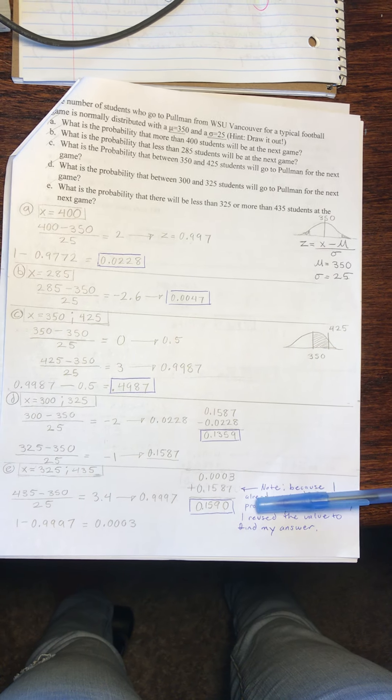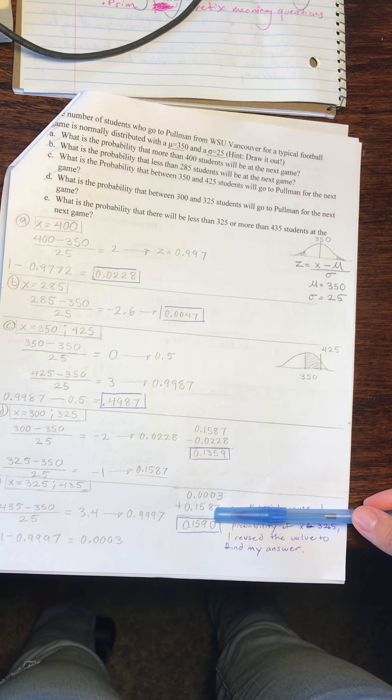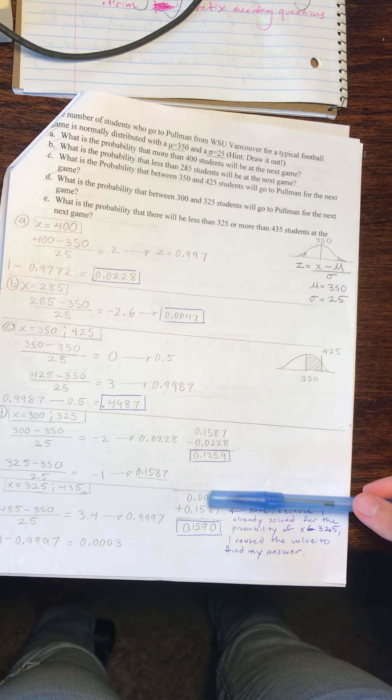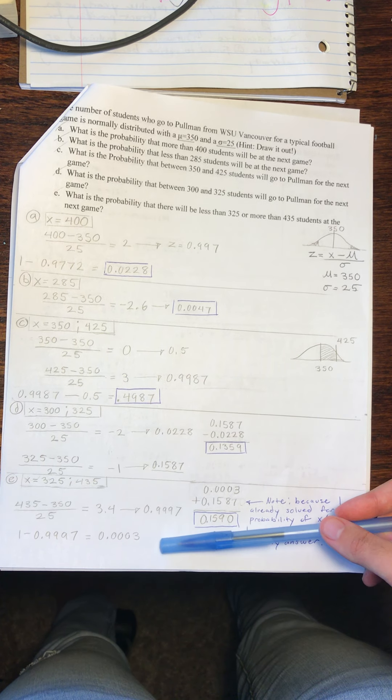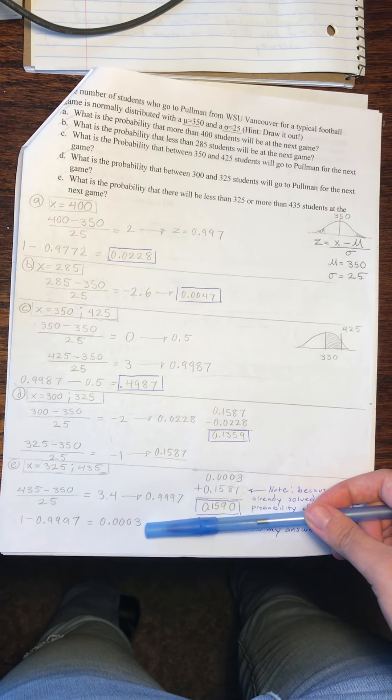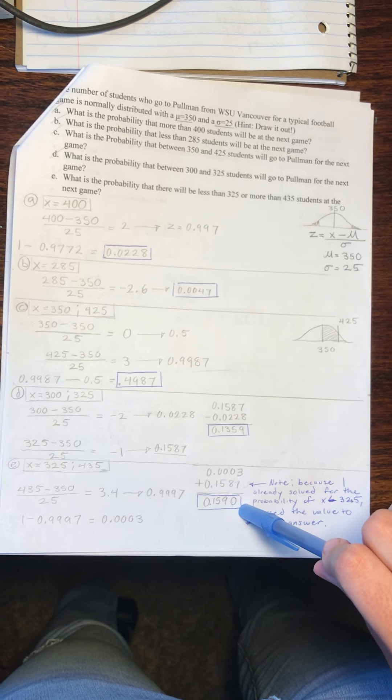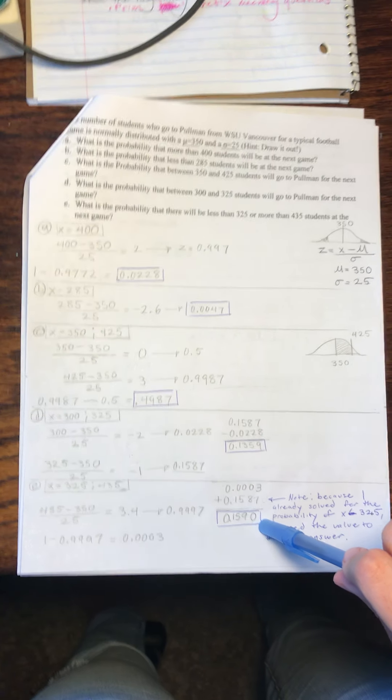We will take these values, the value already found for 325 in D, and we will add our new value for 435, and that gives us a result of 0.1590.